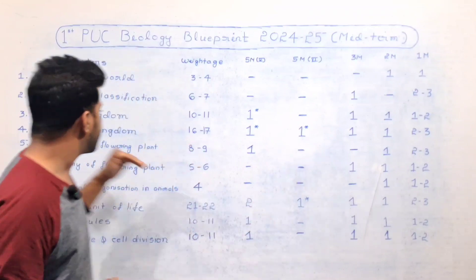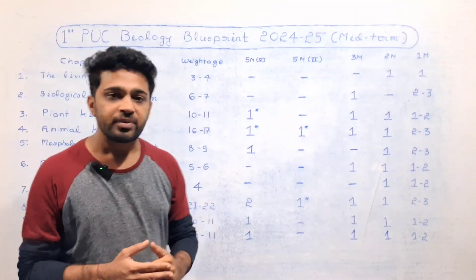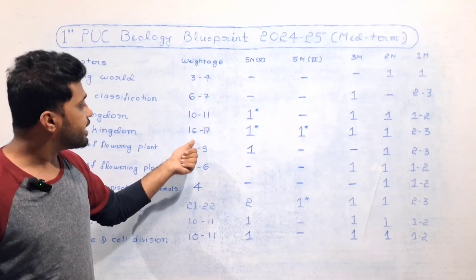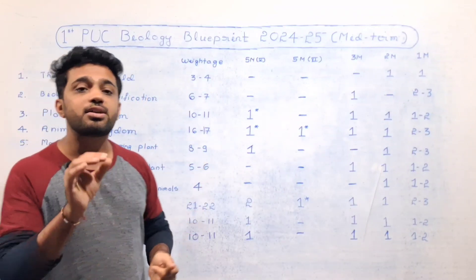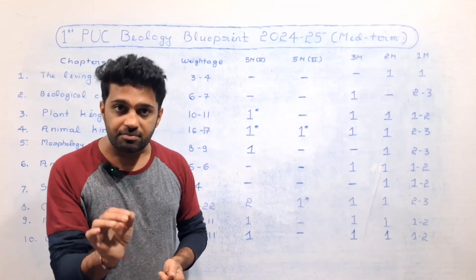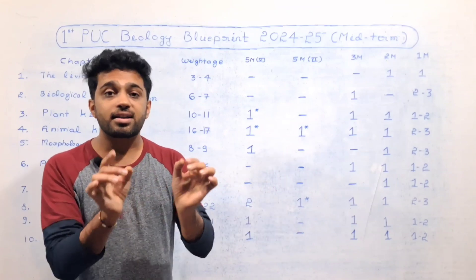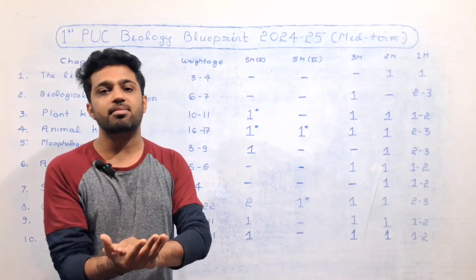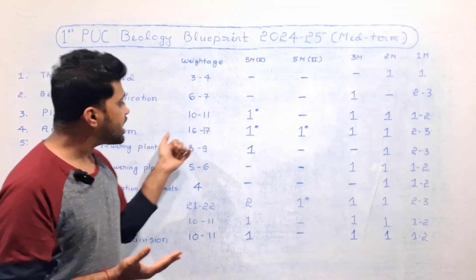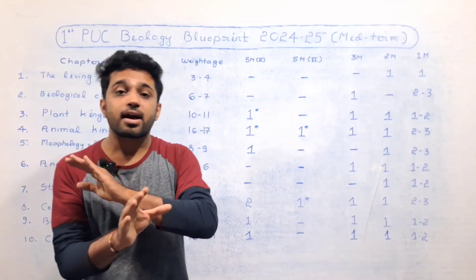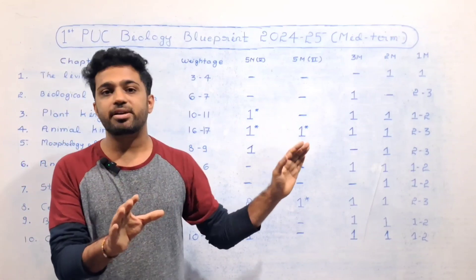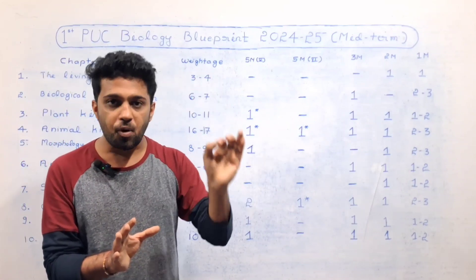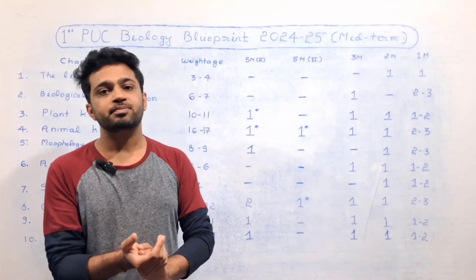Next is Animal Kingdom. This is about 16 to 17 marks. It is about 16 marks — midterm exam. It is about 10 marks and 5-mark related questions.